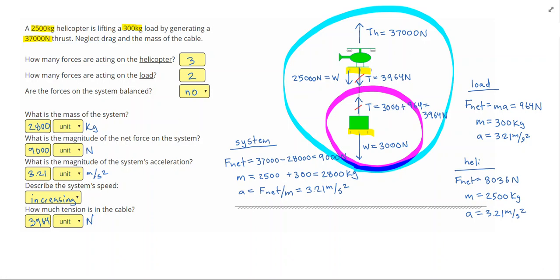then when I do my mass times my acceleration, so 2,500 times 3.21, I get 8,025, which is very close to 8,036. So I just use this to confirm my answer.